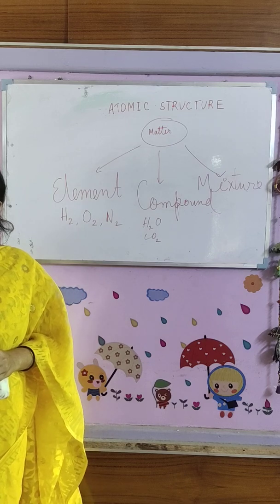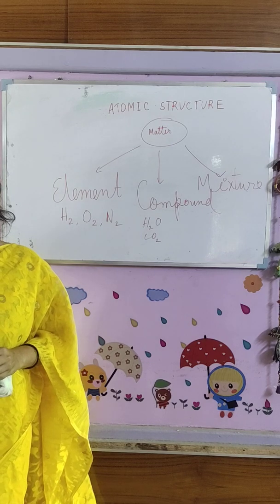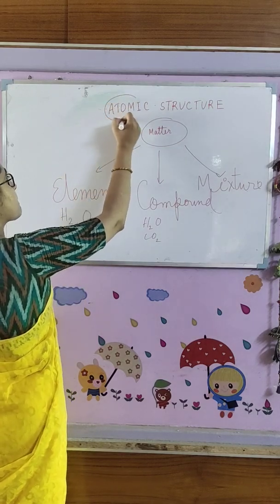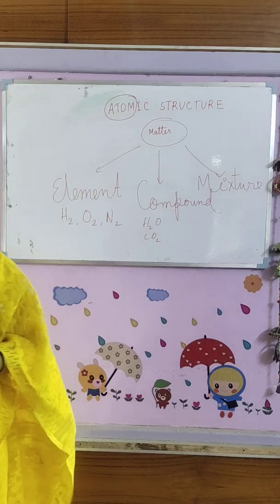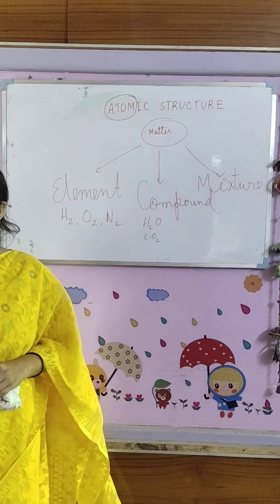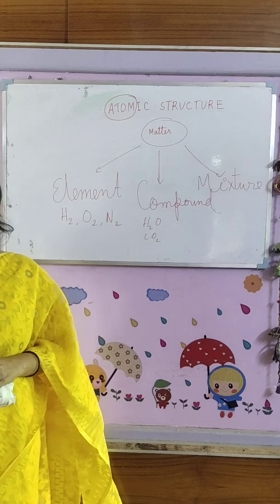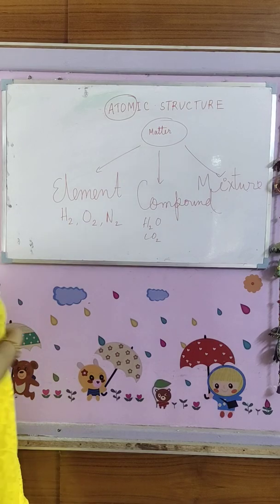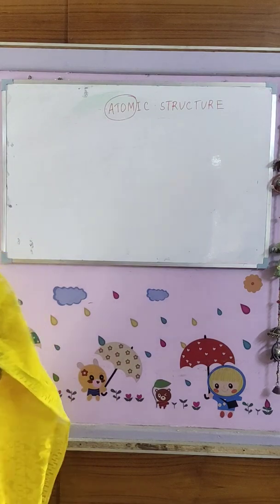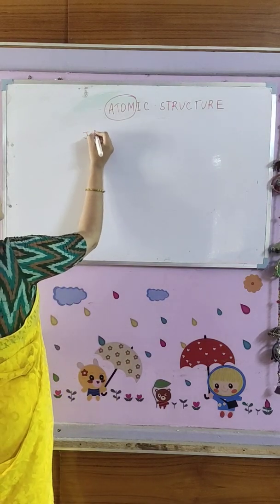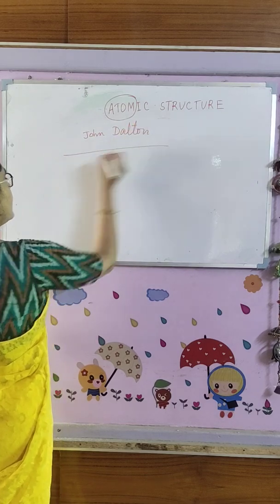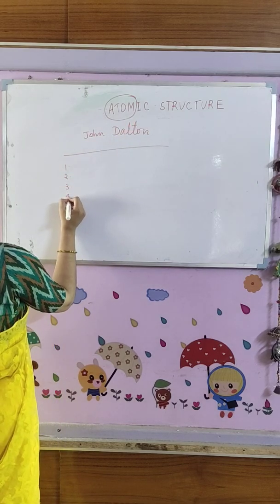When scientists started dividing each and everything, the smallest particle that they got out of anything — they called atom. So the atom is the smallest particle of each and everything. It is the fundamental building block of each and everything. Now, about atom, I want to tell that John Dalton gave five postulates about atom.